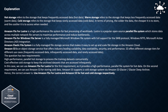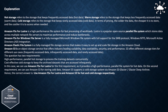Amazon FSx for Lustre is a high-performance file system for fast processing of workloads. Lustre is a popular open-source parallel file system which stores data across multiple network file servers to maximize performance and reduce bottlenecks. Amazon FSx for Windows File Server is a fully managed Microsoft Windows file system with full support for the SMB protocol, Windows NTFS, and Microsoft Active Directory integration. Amazon Elastic File System is a fully managed file storage service. Amazon S3 is an object storage service offering scalability, data availability, security, and performance, with different storage tiers for frequently, infrequently, and rarely accessed data.